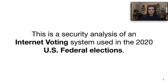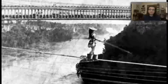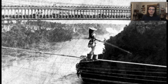This is a security analysis of an internet voting system used in the 2020 U.S. federal elections. And to begin, I'd like to start by explaining a bit of a tightrope act that we have to do here. On the one hand, as researchers, we have to be able to critique the systems that we're using in order to protect voters and improve the democratic process. On the other, we have to be careful to avoid allowing our work to be taken out of context and used to attack the very institutions we're trying to protect.